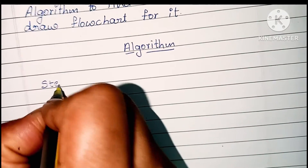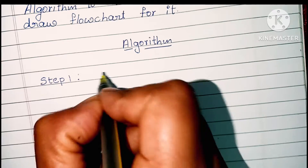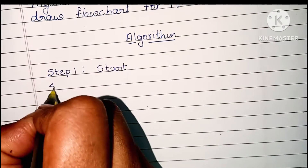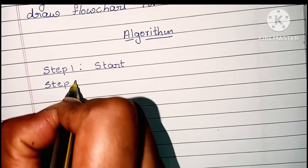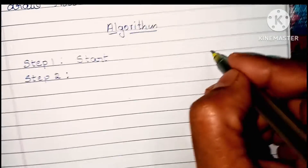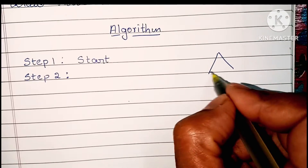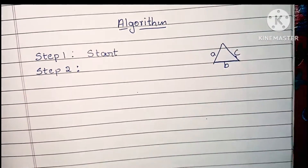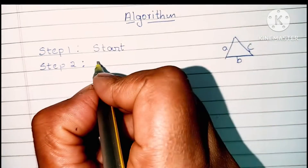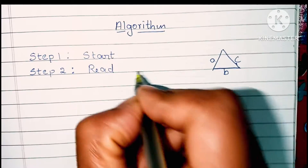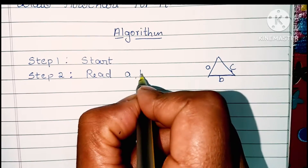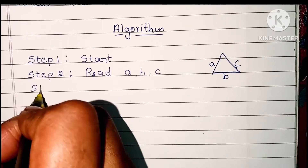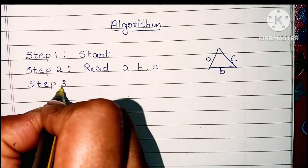Step one is always the start statement, so here we have to write the start statement. In step two we have to read the input values. To find the area of a triangle we need three sides of the triangle, so here we have to read the sides of the triangle: a, b, c.